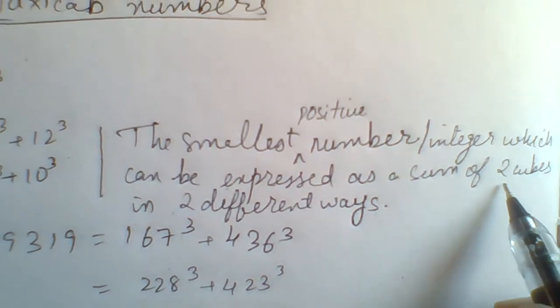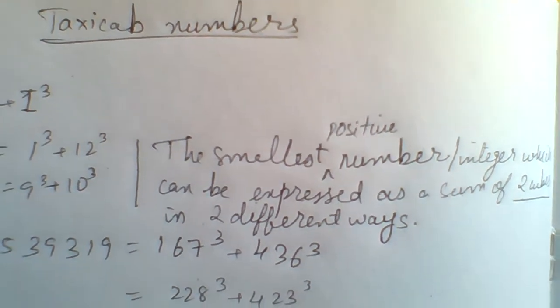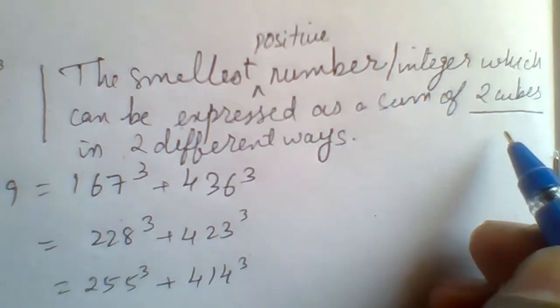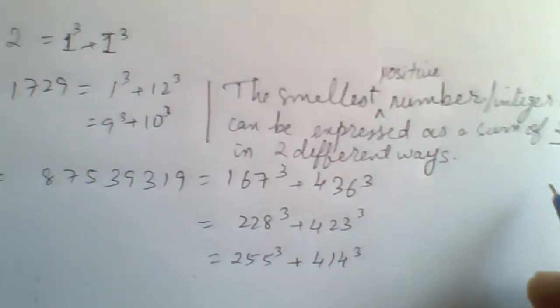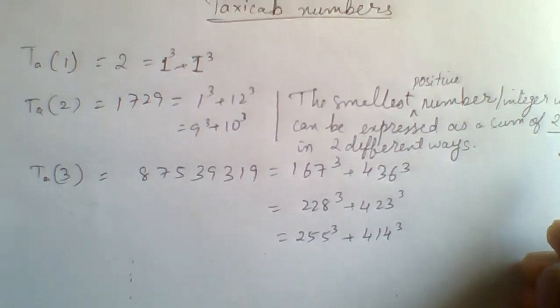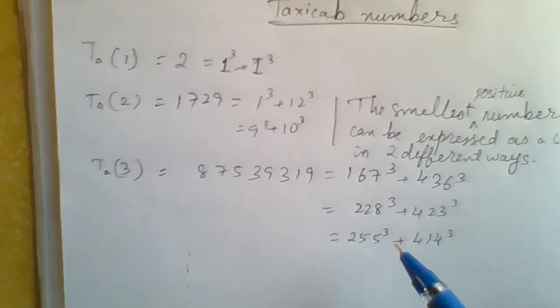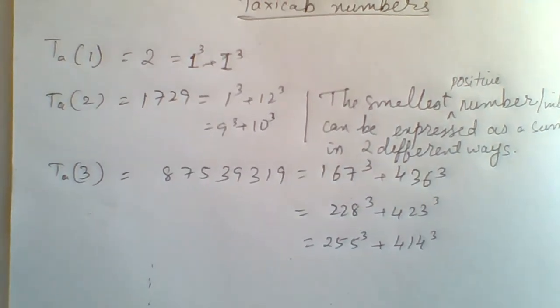When we talk about two cubes, it is possible that the two cubes may be positive or may be negative. In layman's language we consider that they are all positive, and that is how we define the taxicab numbers.